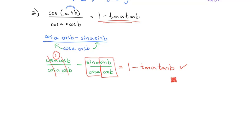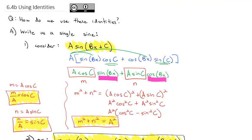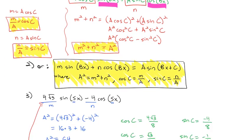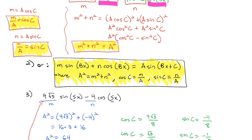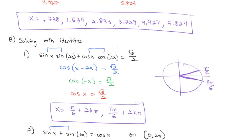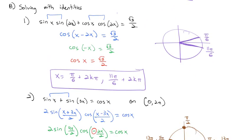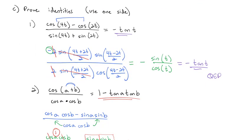As we continue to get comfortable with these identities, we're doing three things with them. First, writing sine plus cosine as a single sine, which makes solving and simplifying easier. Second, using the identities to help solve equations. And third, using these identities to prove new identities. Practice is what makes you comfortable — learning how to recognize when to use which one. Let me know if you have any questions.